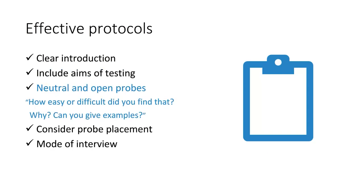Tip 3: Always write probes that are neutral. For example, 'How did you find that?' is a neutral probe, whereas 'Was that difficult?' is a biased probe. Ideally, probes should be open rather than closed, as open probes will elicit more feedback. Asking follow-up probes like 'Why did you say that?' or 'Can you give me some examples?' are useful ways to gain more information and further insight from a closed probe.